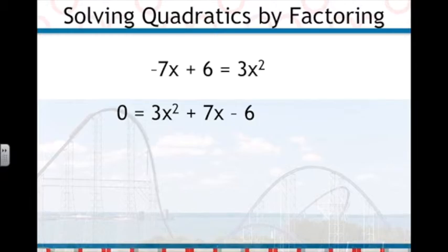Notice everything's on one side and the x squared is positive. Our next step is to factor 3x squared plus 7x minus 6. Remember we have to be careful factoring when we have a coefficient other than 1 in front of the x squared.